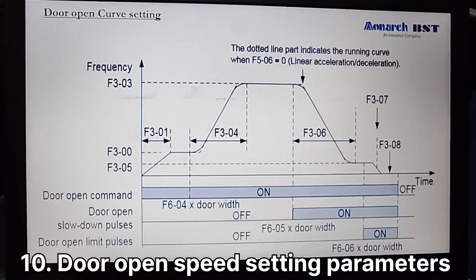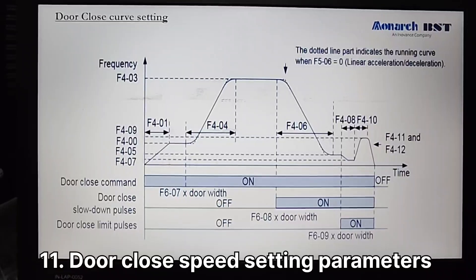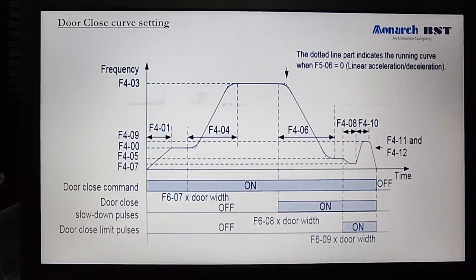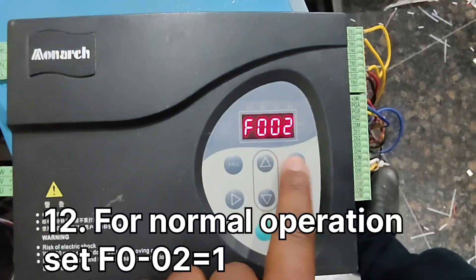After door open speed and close speed settings parameters and speed adjustment, set F002 to 1 for normal operation.